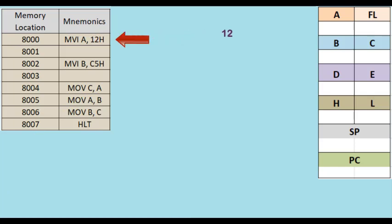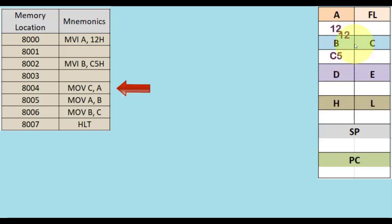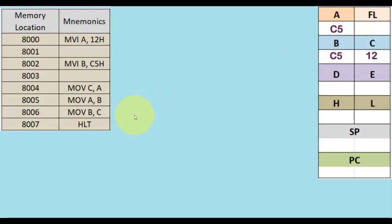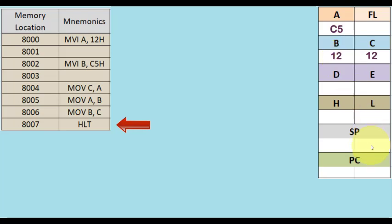With the first instruction MVI A, 12H gets stored in A. With MVI B, C5 gets stored in register B. With MOV C,A the contents of A get transferred to C. With the next instruction MOV A,B the contents of B are transferred to A. And the last instruction MOV B,C transfers the contents of C to register B. So the final result: A contains C5 and B contains 12.